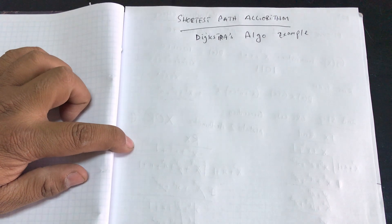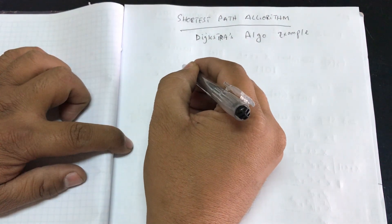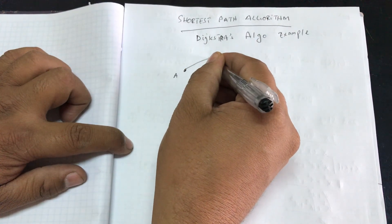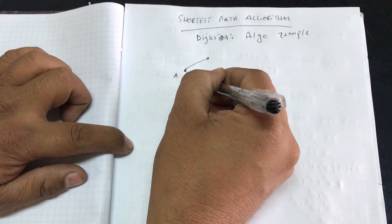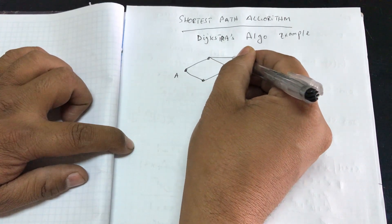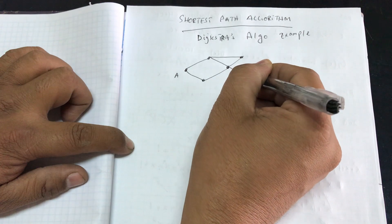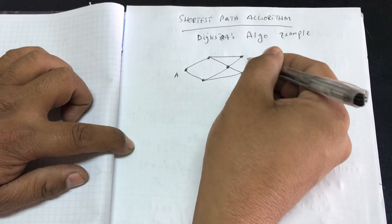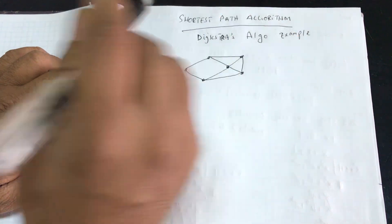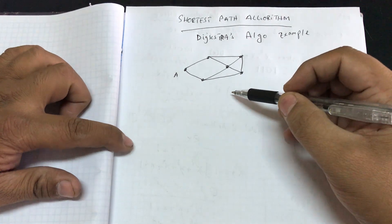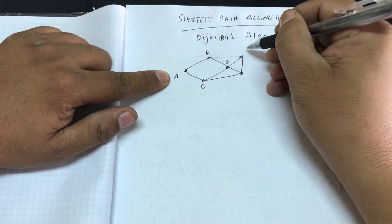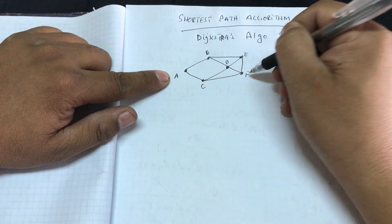We're going to draw a small map. We have a starting point — let's call that A — and then we have different paths in the middle. Let's say I have five nodes: node A, node B, node C, node D, node E, and node F.